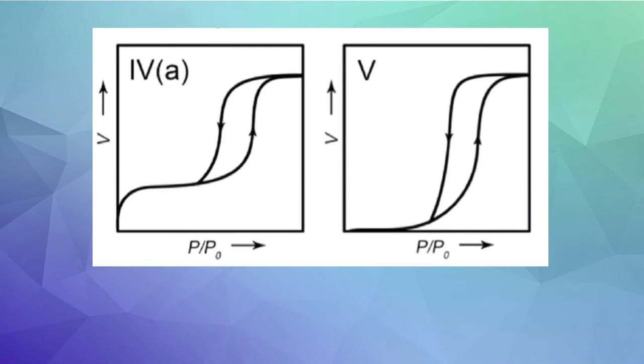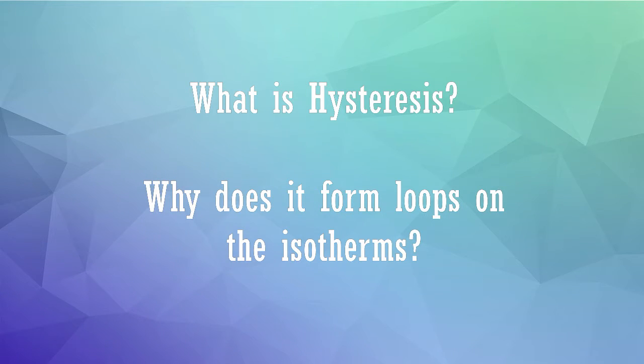You can see that some of the adsorption isotherms contain loops where the line branches off depending on whether the material is adsorbing or desorbing. Those are called hysteresis loops. First, what is hysteresis and why does it form a loop on some of the isotherms?